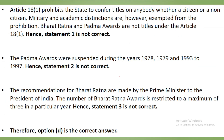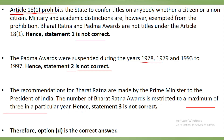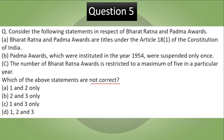The correct answer is D — all three statements are incorrect. Article 18 deals with abolition of titles; awards cannot be used as titles. Padma awards were suspended during 1978–79 and 1993–97, so statement 2 is incorrect. The Bharat Ratna is restricted to a maximum of three persons per year, with recommendations made by the Prime Minister to the President. So statement 3 is also incorrect. Answer is D.